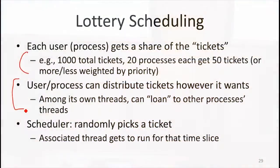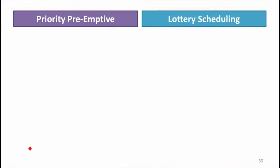How does lottery scheduling compare to priority preemptive on resource usage? Not really better — it's still following the model where the scheduler runs periodically and each time picks a new process to run. It's doing a lot of switching, probably more because it's randomly picking. On fairness: one thing we didn't like about priority preemptive is that if there are enough high-priority processes to keep the CPU busy, the low-priority processes never get to run at all. Does lottery scheduling have that same starvation property?